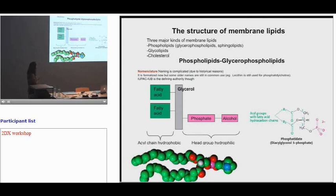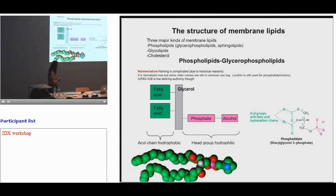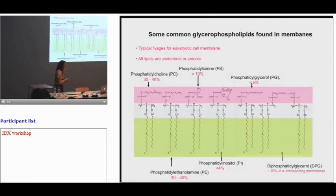There are three kinds of lipids: phospholipids, glycolipids, and cholesterol. Phospholipids are generally made with four components: a glycerol backbone, fatty acids, a phosphate group, and an alcohol. The hydrophobic part consists of the acyl chains. Some common glycerolipids include the hydrophobic acyl chain region, the glycerol part, and the phosphate plus amino alcohol forming an ester bond.